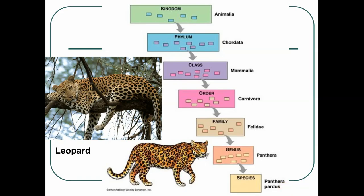Humans are naturally lazy, so instead of listing all seven levels, we use the binomial form of the Linnaean system, where we simply give the last two. A leopard would be called Panthera pardis — genus and species.